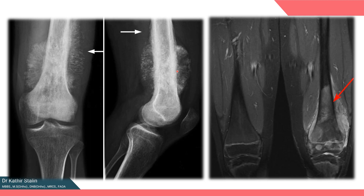Histologically, the diagnosis relies on the presence of tumor cells producing osteoid and stromal cells. In this MRI, you can see the intramedullary extension, the metaphyseal extension, and the periosteal elevation.